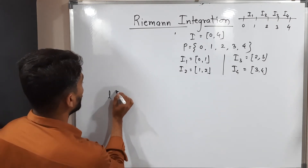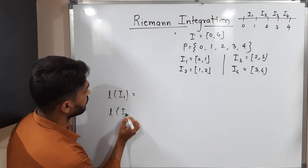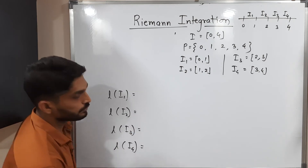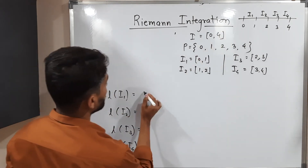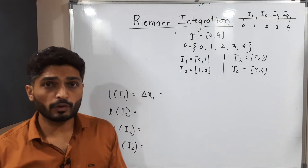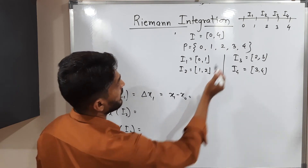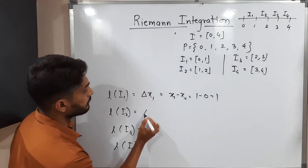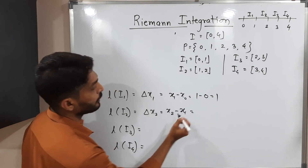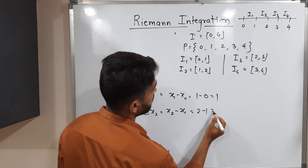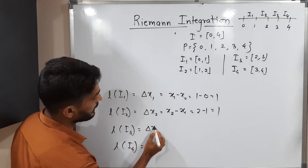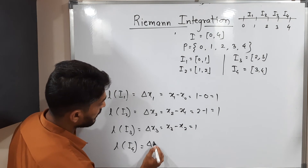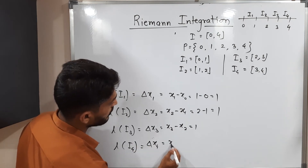Now let us find the length of each interval. Length of I1 = delta x1 = x1 − x0 = 1 − 0 = 1. Length of I2 = delta x2 = x2 − x1 = 2 − 1 = 1. Length of I3 = delta x3 = x3 − x2 = 3 − 2 = 1. Length of I4 = delta x4 = x4 − x3 = 4 − 3 = 1.